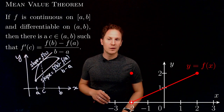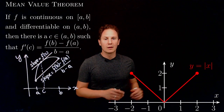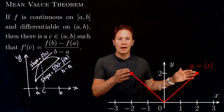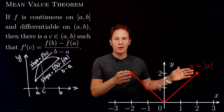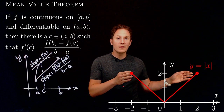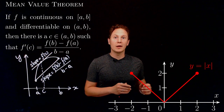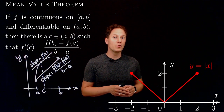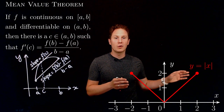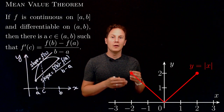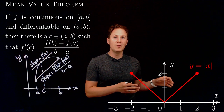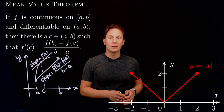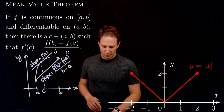To show why differentiability on the open interval is important, we can call on the absolute value of x. It is continuous on any closed interval — here between negative two and two — but it is not differentiable at every point between negative two and two, because zero is included and the derivative does not exist at zero. We end up with a situation where the slope of the secant line connecting the endpoints is zero, but the derivative of the function is never zero on the open interval at the points where it exists. This is why differentiability is important.